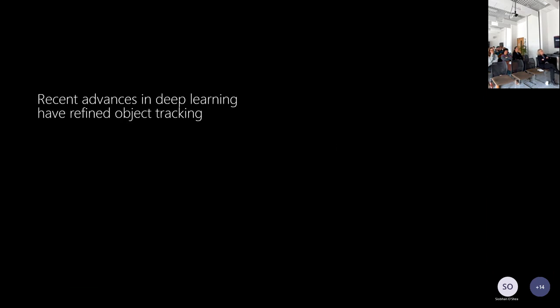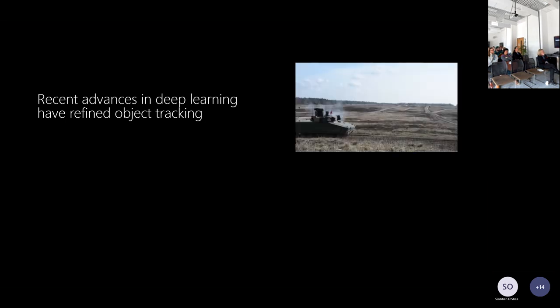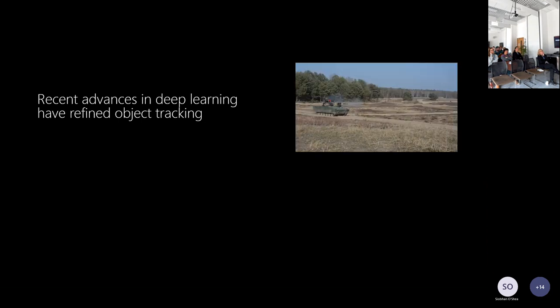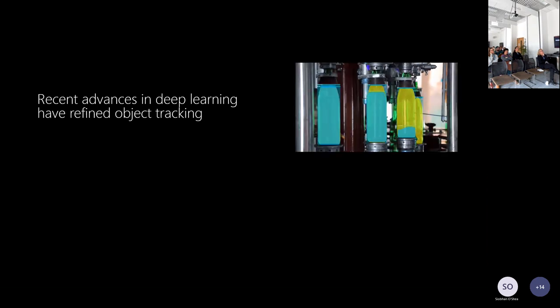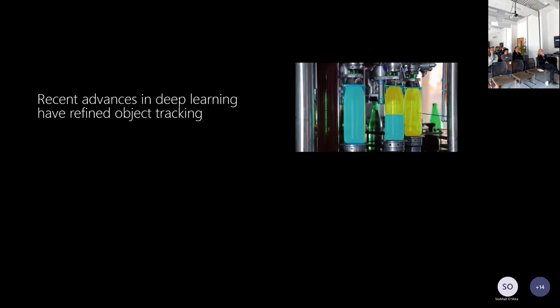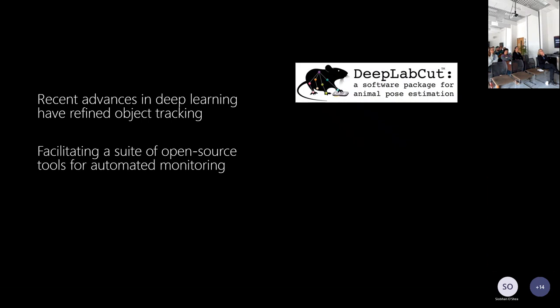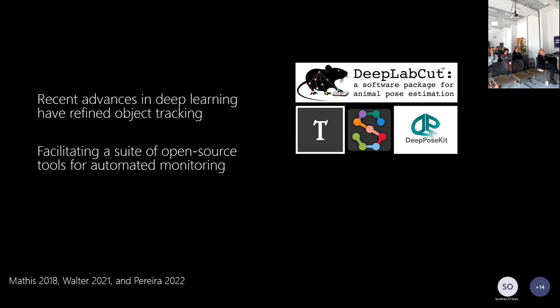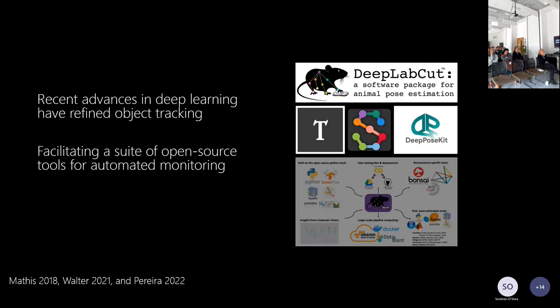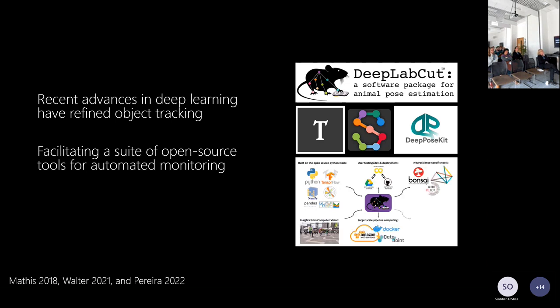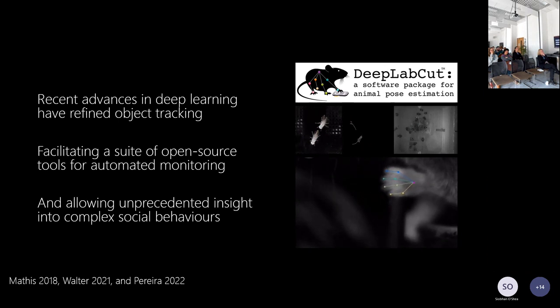I'm very briefly going to touch on automated tracking, which for insect colonies is really a good way to get deep insight. There's been an explosion of technology recently in terms of object tracking, detection, and identification from deep learning algorithms. Many started in military applications — for tracking fire control of moving targets — but have been incorporated down into industry for fault detection, and as with most things eventually became open-source tools for science. This includes a whole array of Python-based packages such as DeepLabCut, TRex, Sleap, and DeepPoseKit, providing unprecedented insight into animal behaviour and interactions.